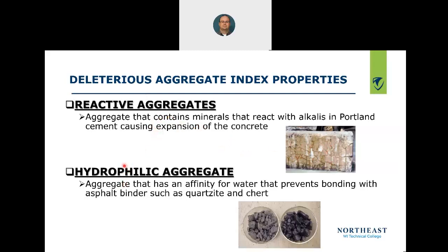Hydrophilic aggregate has an affinity for water that prevents bonding with asphalt binders — examples include quartzite and chert. Quartzite is prevalent in the Wausau area at Rib Mountain (Granite Peak). When crushed quartzite was tried in asphalt, the chemical reaction caused it to bond water around the particles, preventing the asphalt from sticking to the aggregate, creating thin shear surfaces and causing the mix to fall apart. Hydrophilic means attracts water.